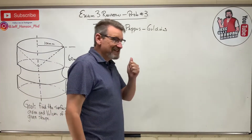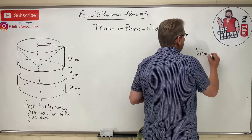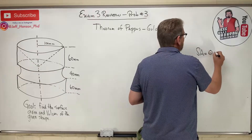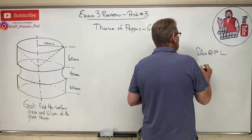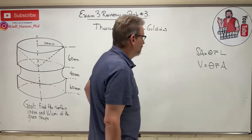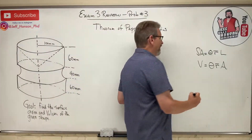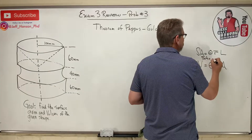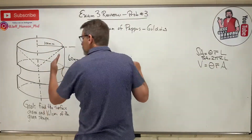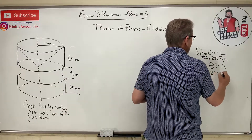The Theorems of Pappus-Guldinus deal with surface areas and volumes of axis-symmetric or revolved shapes, and they go like this: Surface area equals theta times r-bar times L, and volume equals theta times r-bar times A. In our case, since this shape is revolved 360 degrees, surface area equals 2π x-bar L, and volume equals 2π x-bar A.